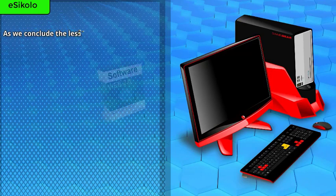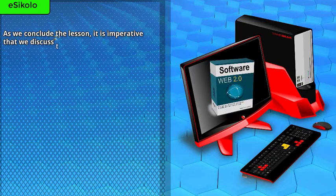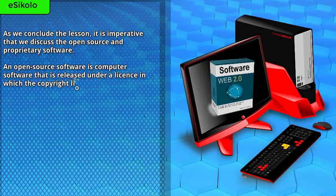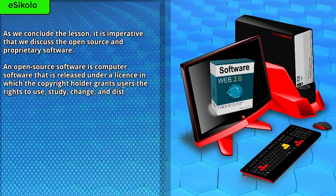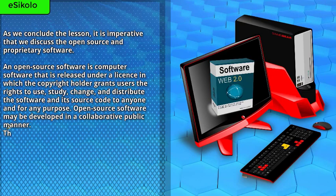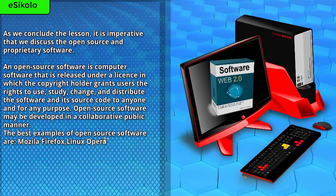As we conclude the lesson, it is imperative that we discuss open source and proprietary software. An open source software is a computer software that is released under a license in which the copyright holder grants users the right to use, study, change, and distribute the software and its source code to anyone and for any purpose. Open source software may be developed in a collaborative public manner. The best examples of open source software are Mozilla Firefox, Linux operating system, and Python programming software.